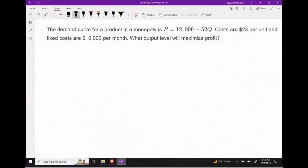In this video, let's suppose that the demand curve for a product is given by P = 12,000 - 52Q. If costs are $23 per unit and we know fixed costs are $10,000 per month, let's determine the maximal profit level.